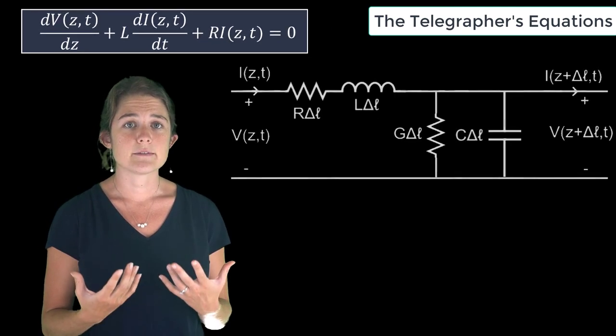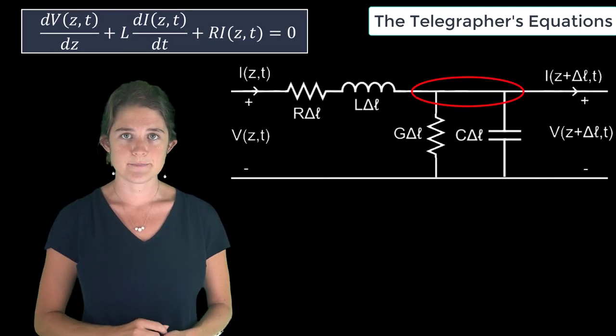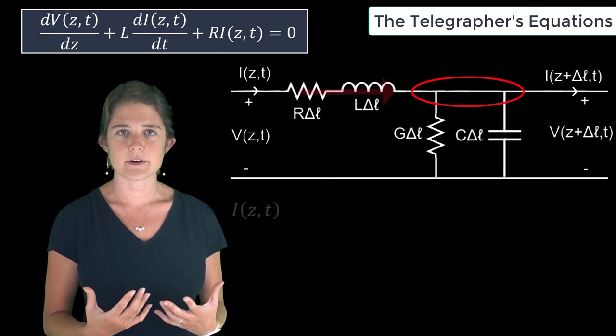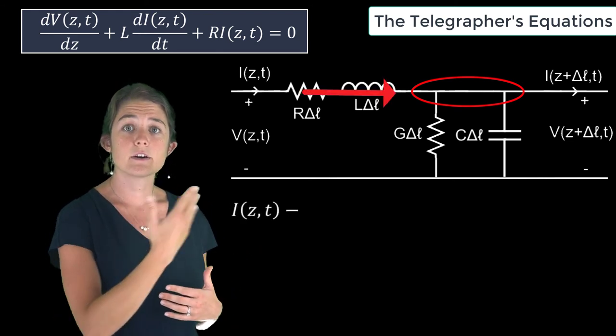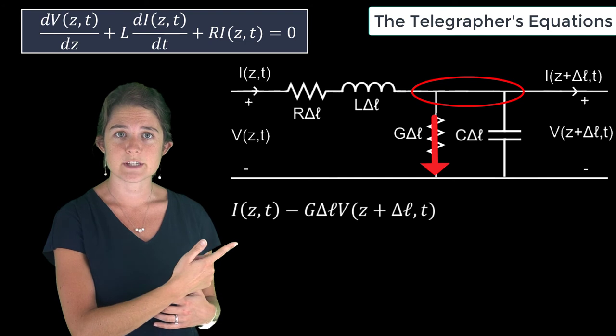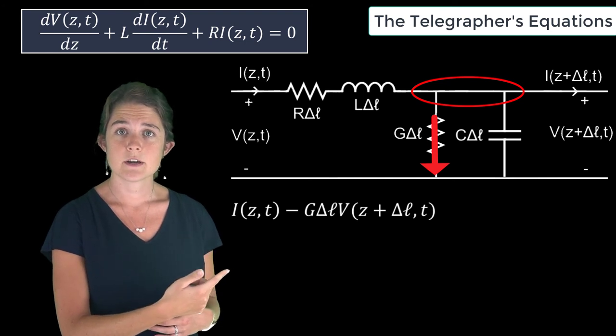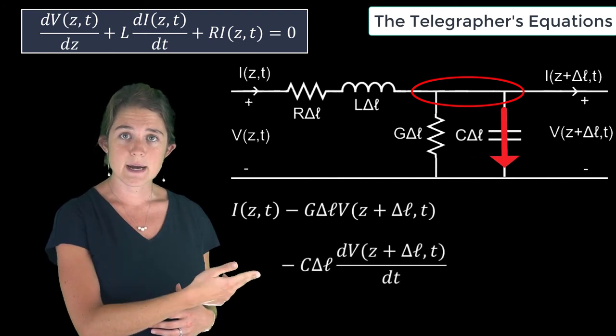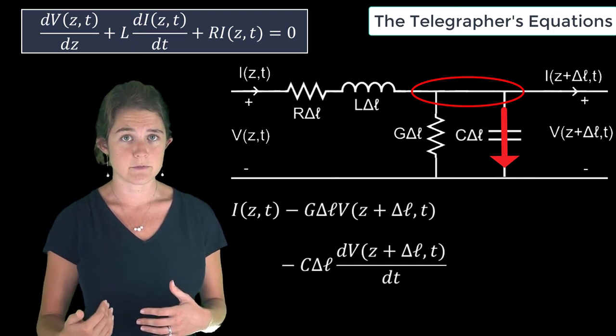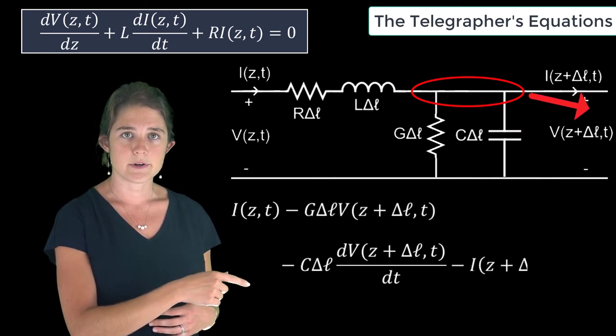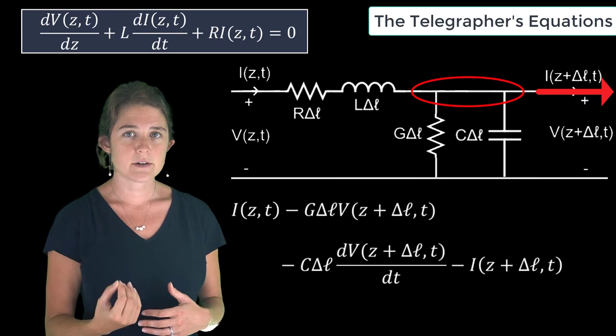Similarly, we can apply Kirchhoff's current law at this node here. We have the input current coming in minus the current leading through this resistor, which is the conductance times the voltage, minus the current leaving through the capacitor, which is capacitance times the time derivative of voltage, minus the output current. By Kirchhoff's current law, this has to equal zero.